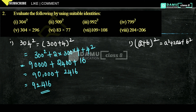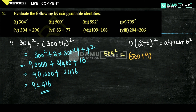Our next one is 509 whole square. That will be equal to — we are going to use the same identity here also, which is (a+b)². So we write 509 as 500 plus 9, whole square. Then applying (a+b)², that is 500² plus 2 into 500 into 9 plus 9².